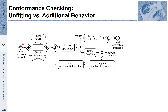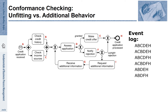Let's have a look at the corresponding event log. We observe the following sequences: A, B, C, D, E, H — a successful, granted application. We also have A, C, B, D, E, H — also a successful application, but with activities B and C in a different order.